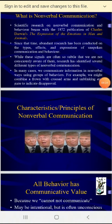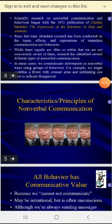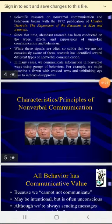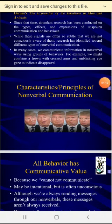In many cases we communicate information in nonverbal ways by using groups of behaviors. For example, we might combine a frown with crossed arms and an unblinking eye gaze to indicate disapproval. If we want to disagree with someone, we are showing a frown on our forehead, crossing our arms, and not blinking our eyes — it is showing disagreement with that person.